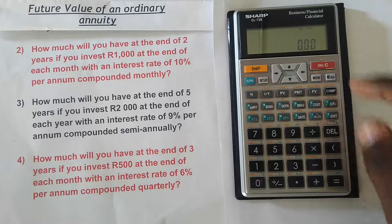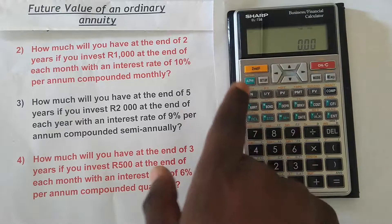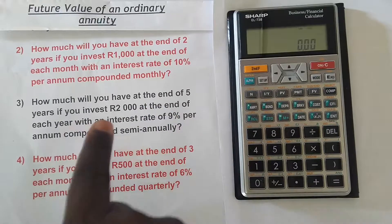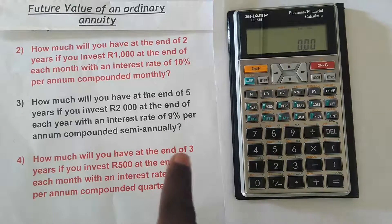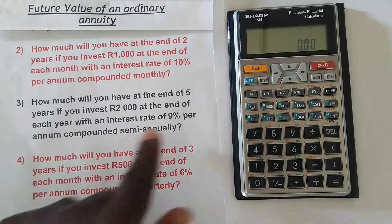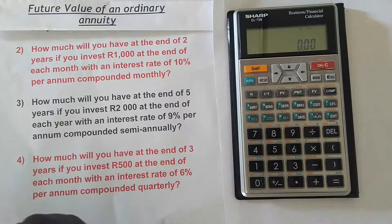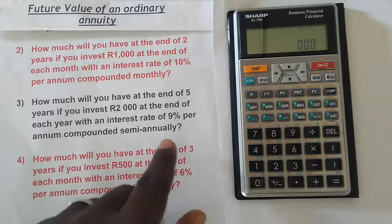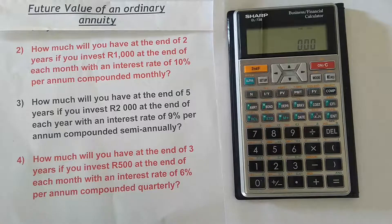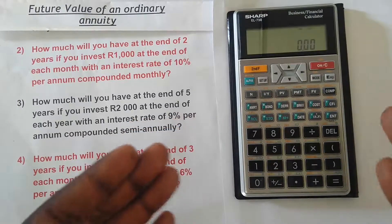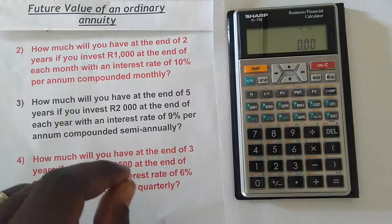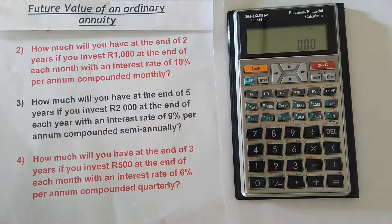Let's move on to the next example. Clear the memory: second function, alpha, zero, zero. We are asked: how much will you have at the end of five years if you invest R2,000 at the end of each year with an interest rate of 9 percent per annum compounded semi-annually? The payment occurs annually and the interest rate is compounded semi-annually — twice per year — so they do not coincide.